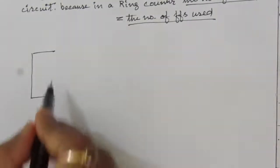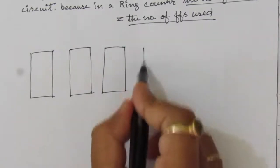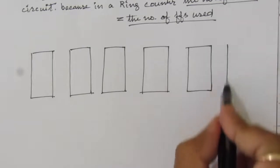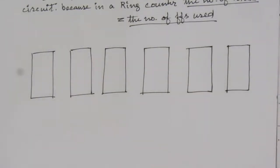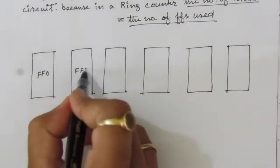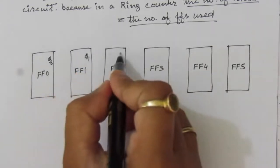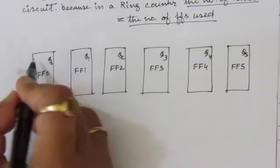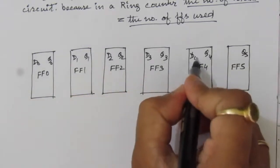Let me draw the circuit. We will have 6 flip-flops — let us use D flip-flops. This is flip-flop 1, flip-flop 2, flip-flop 3, flip-flop 4, flip-flop 5, and flip-flop 6. We assume flip-flop 0 as the first. The outputs are Q0, Q1, Q2, Q3, Q4, Q5, and the corresponding inputs are D0, D1, D2, D3, D4, D5.